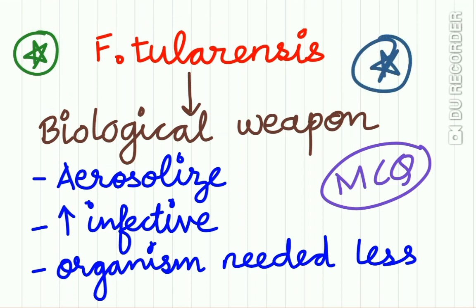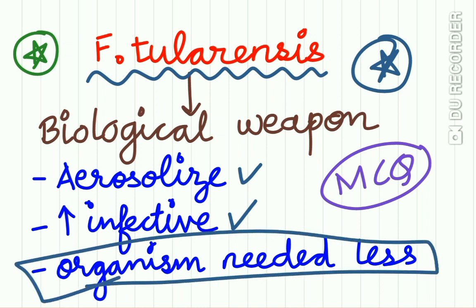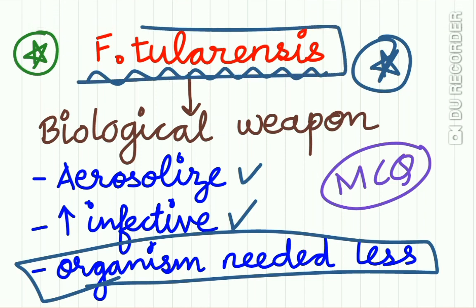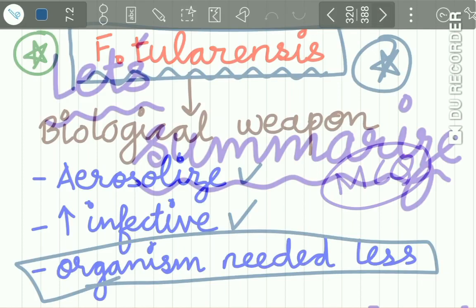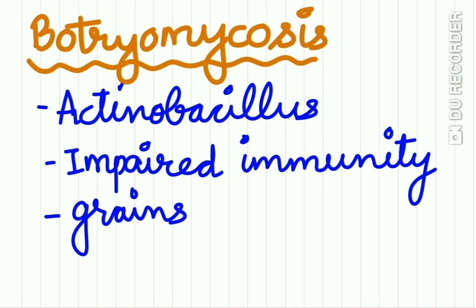An important point to remember: Francisella tularensis, the causative organism for rabbit fever, can be used as a biologic weapon. It can be used as such because the organism easily aerosolizes, is highly infective, and even a small quantity is sufficient to cause widespread infection. Remember: Francisella tularensis is considered a potential biologic weapon.